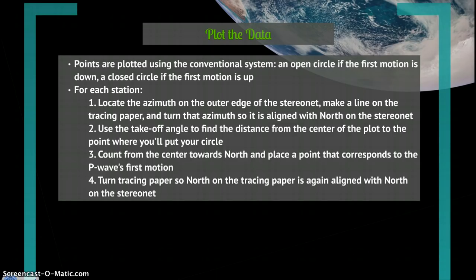Count from the center towards north. Each line represents two degrees on the stereonet. Count over until you've reached the correct number for your takeoff angle, then place a point that corresponds to the P wave's first motion, an open or closed circle.